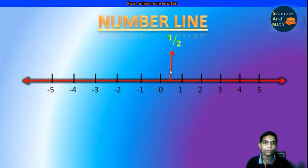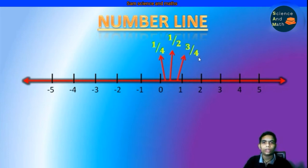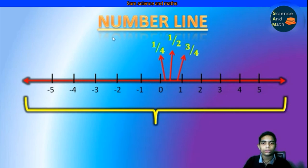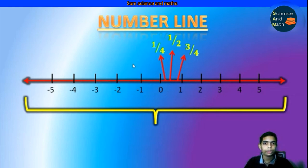Then where is 1/4 and 3/4? Here they are — 1/4 and 3/4. You know such basic concepts about the number line. So by this we can conclude that there is a unique number beside any number on a number line. For example, there is a unique number that is 1/4 beside 0.